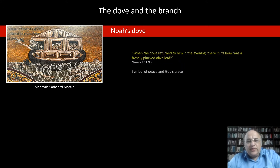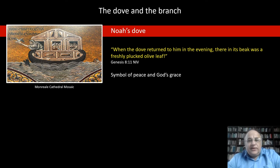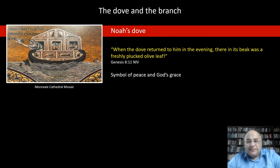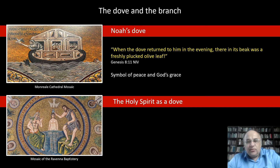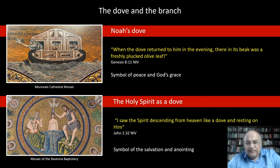The first is the story of Noah. When the last bird, a dove, returns to the ark — we find in Genesis chapter 8: 'When the dove returned to him,' meaning Noah of course, 'in the evening, there in its beak was a freshly plucked olive leaf.' So the meaning of the symbol is peace or God's grace. The second is when Jesus is baptized by John in the river Jordan. We find in John chapter 1: 'I saw the Spirit descending from heaven like a dove and resting on him.' So it is the symbol of salvation or anointing.